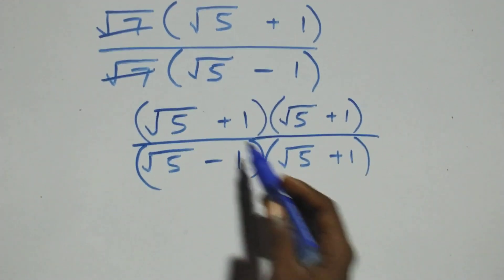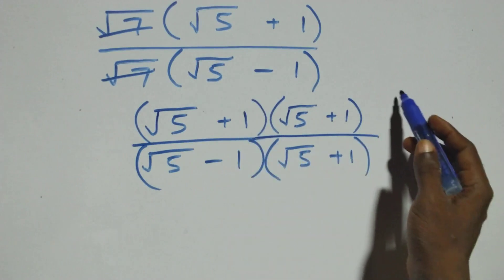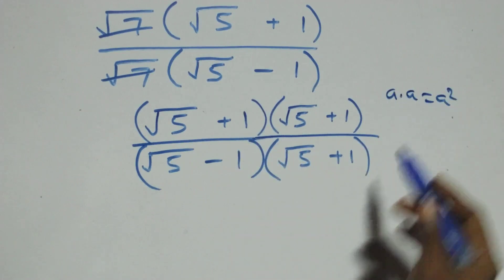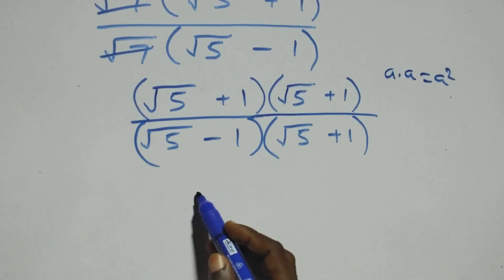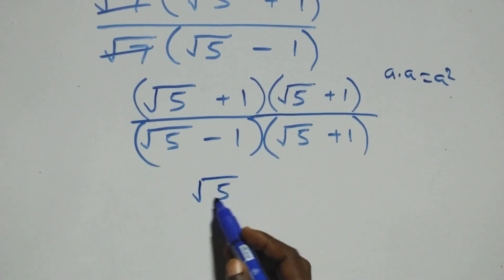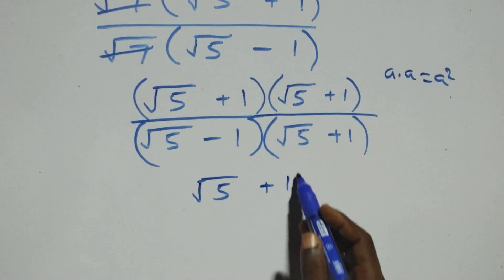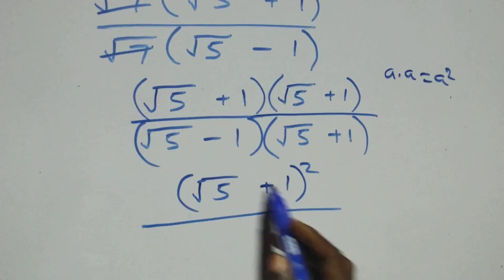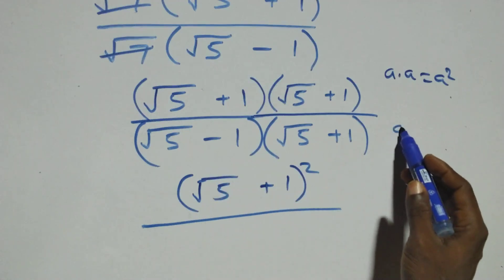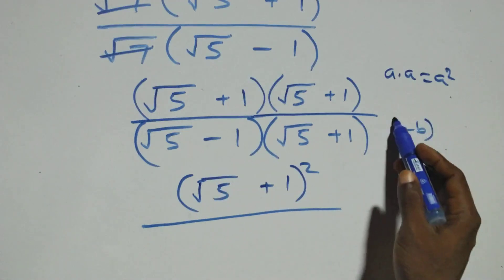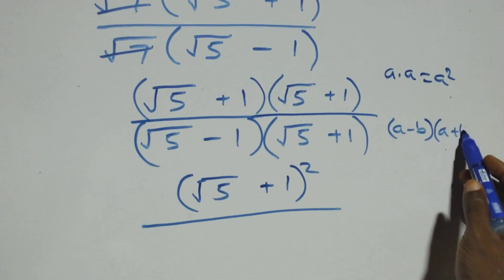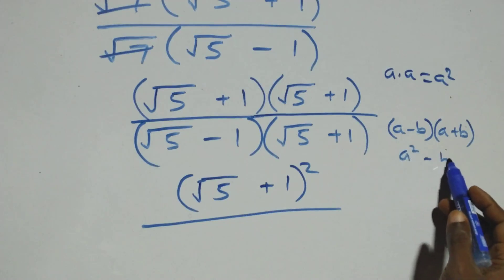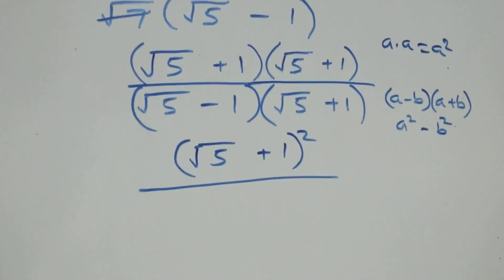Then next step here. This bracket has the same thing inside. We have A times A, which is the same as A squared. So here we can write this as root 5 plus 1, all squared. Then divided by: this also follows when we have A minus B in brackets, also into brackets A plus B, which can be written as A squared minus B squared.